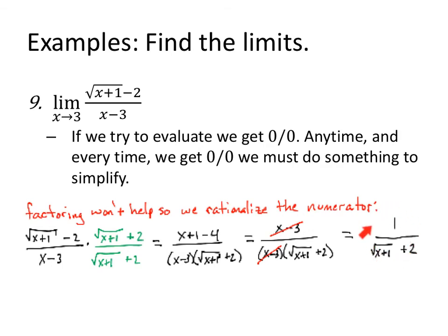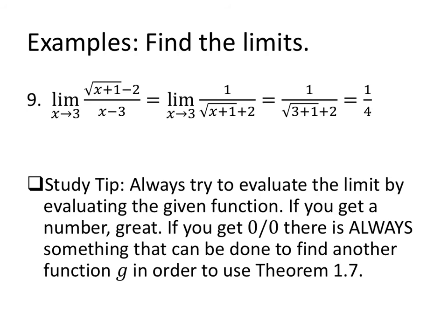And I have a new function, a similar function, a G of X function, that is 1 from my numerator. When we factor, it might be handy to write the 1 times X minus 3 so that you see the 1 as it carries over to your numerator. And you remember that you have a fraction. 1 over the square root of X plus 1 plus 2 is my new function, G. So now, to evaluate the limit as X approaches 3 on something we would get 0 over 0 on, I can instead evaluate the limit as X approaches 3 of my new similar function. 1 over the square root of X plus 1, all plus 2, evaluate, simplify, there you go.